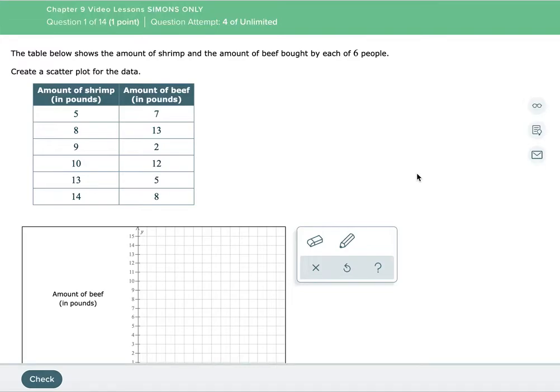This video we are going to talk about how to make a scatterplot. Now a scatterplot is simply a way of us graphing two pieces of information to see if there is some kind of a relationship between those, and we will talk about what those relationships are called in later videos.